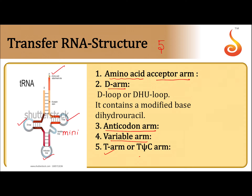The five arms of tRNA are: the amino acid acceptor arm, D arm, anticodon arm, variable arm (otherwise called mini arm), and the TΨC arm. Each arm is made up of two major parts: a loop and a stem.